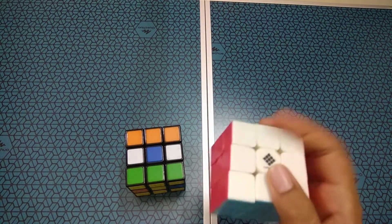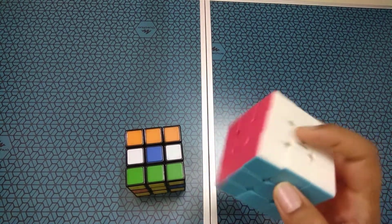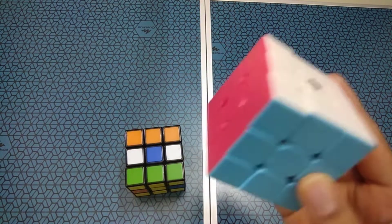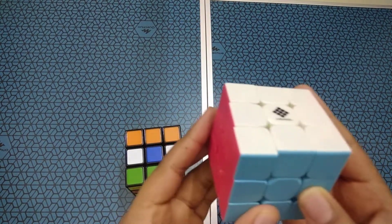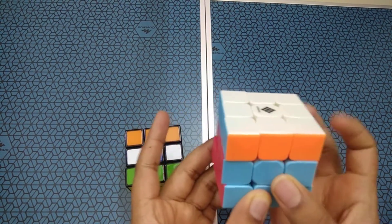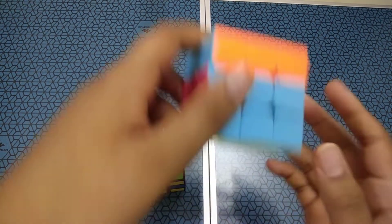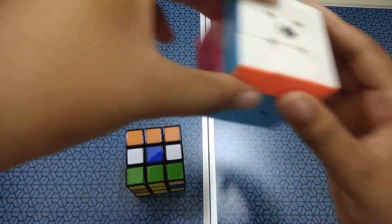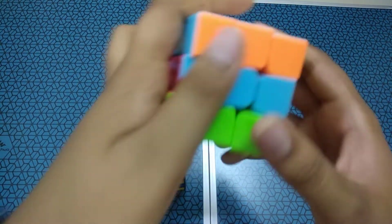Once you're done, then you have to just turn this first layer once until orange comes here, and the third layer two times, one, two, until green comes here.